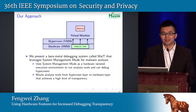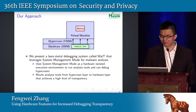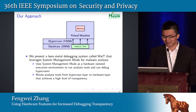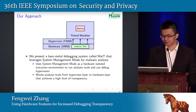In light of this problem, we present a bare metal debugging system called MAUT that leverages system management mode for malware analysis. It uses system management mode as a hardware-isolated execution environment to run the analysis tool, and it is capable of detecting hypervisor-level rootkits. Our approach moves the analysis tool from the hypervisor layer to the hardware, which achieves a higher level of transparency.